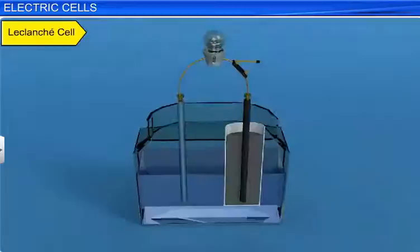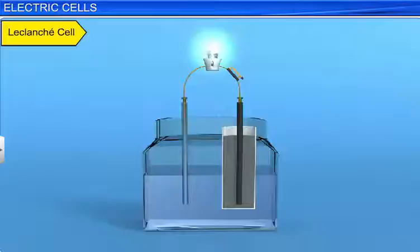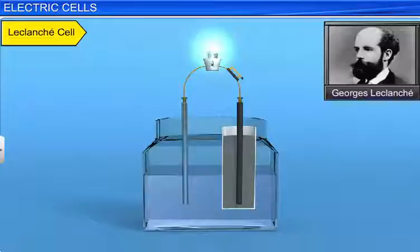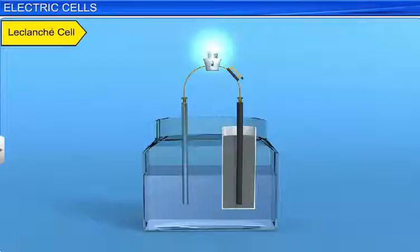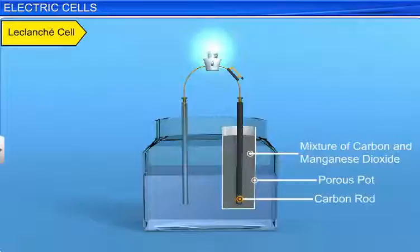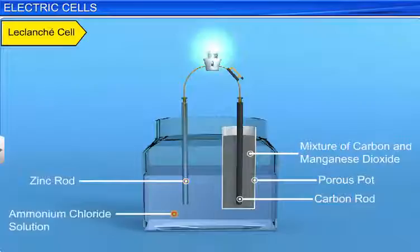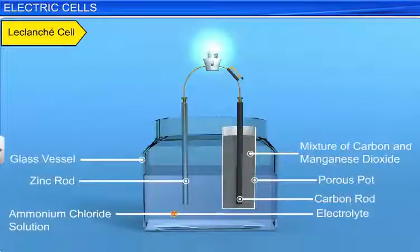Let us now discuss another primary cell, the Leclanche cell or wet cell. The cell was invented by Georges Leclanche in 1886. In Leclanche's original cell, the depolarizer, which consisted of crushed manganese dioxide and carbon, was packed into a porous pot. A carbon rod was inserted in the pot to act as the anode or positive pole. The cathode, or the negative pole, which was a zinc rod, was then immersed along with the pot into a solution of ammonium chloride in a glass vessel. The liquid solution acts as the electrolyte, permeating through the porous pot to make contact with the anode.